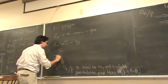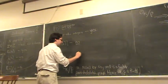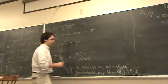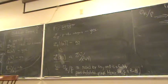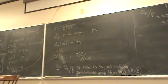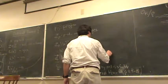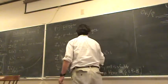What about Z[2i], which you could think of abstractly as Z[x]/(x² + 4)? Is that a Dedekind domain? It's not integrally closed. Its integral closure is Z[i], since i satisfies x² + 1 and is in the fraction field of Z[2i] but not in Z[2i] itself. Therefore Z[2i] is not a Dedekind domain.